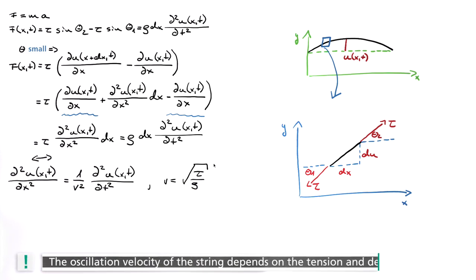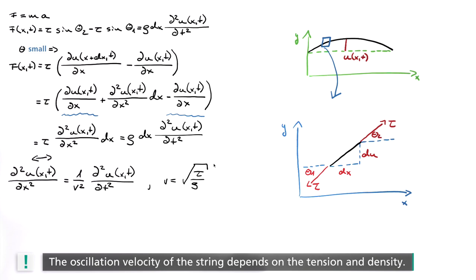Here, the wave velocity v equals the square root of tau divided by rho. This means that the velocity v depends on the physical properties of the string, the tensile stress tau and the density rho. A higher tension results in a greater restoring force and hence in a higher velocity. A higher density describes a larger inertial mass, thereby reducing the wave velocity.